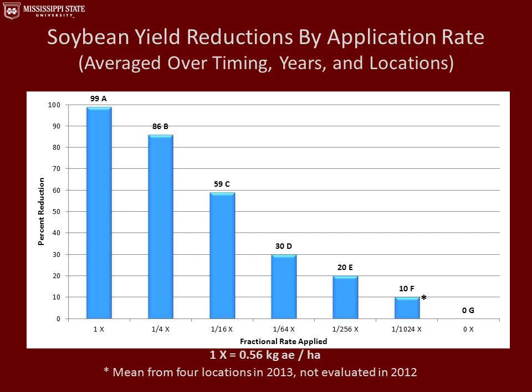This graph represents soybean yield reductions by application rate, averaged over all timings, years, and locations. With the 1x rate we had a 99% yield reduction. With the lowest application rate, the 1/1024x rate, we had a 10% yield reduction, which was significantly different from the untreated check. Keep in mind that the mean for that particular rate was from only four locations, not six like the rest.